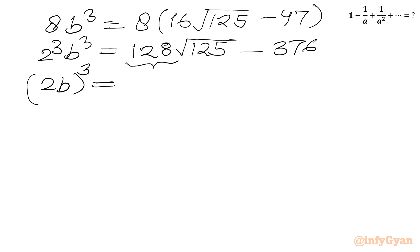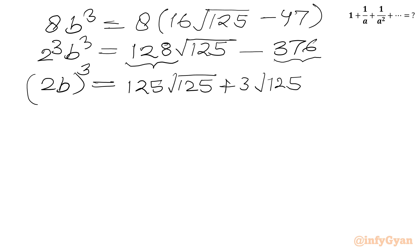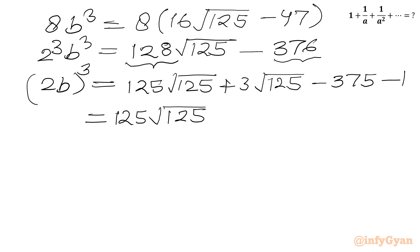Now we split 128 and 376 strategically. 128 equals 125 plus 3, so we get 125√125 plus 3√125. Then minus 376 equals minus 375 minus 1. Rearranging the right-hand side: 125√125, then minus 1, then minus 375, then plus 3√125.